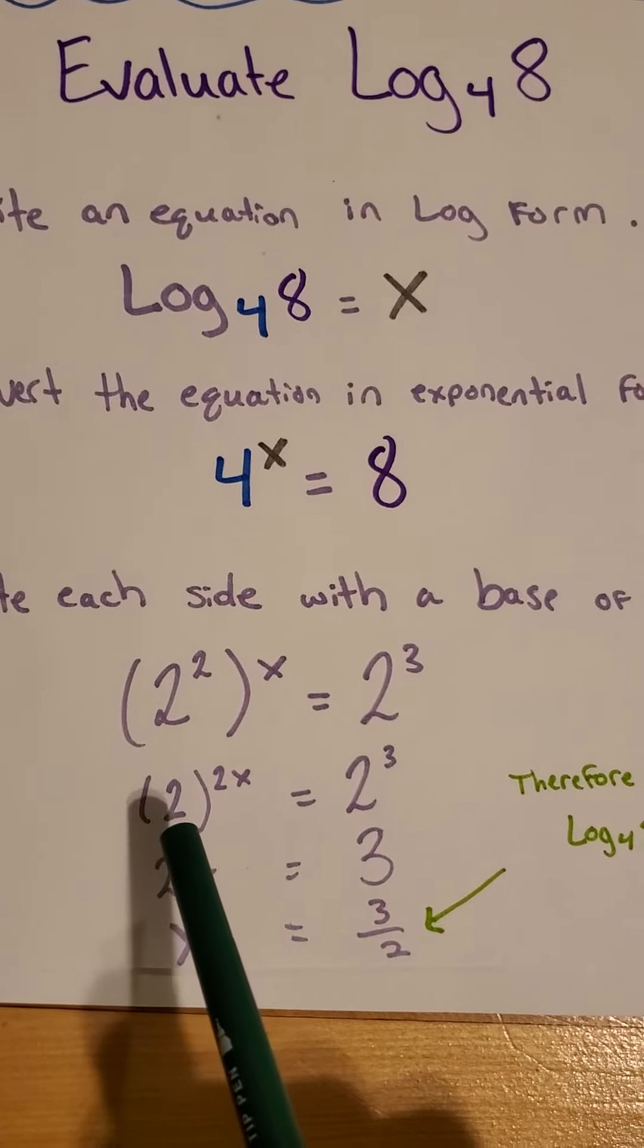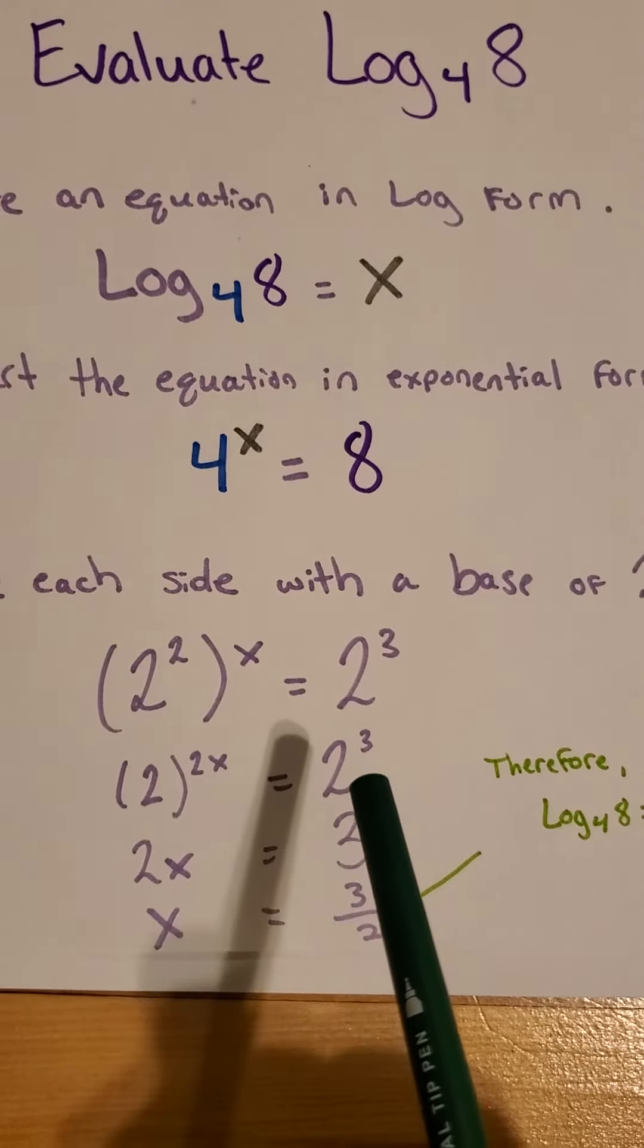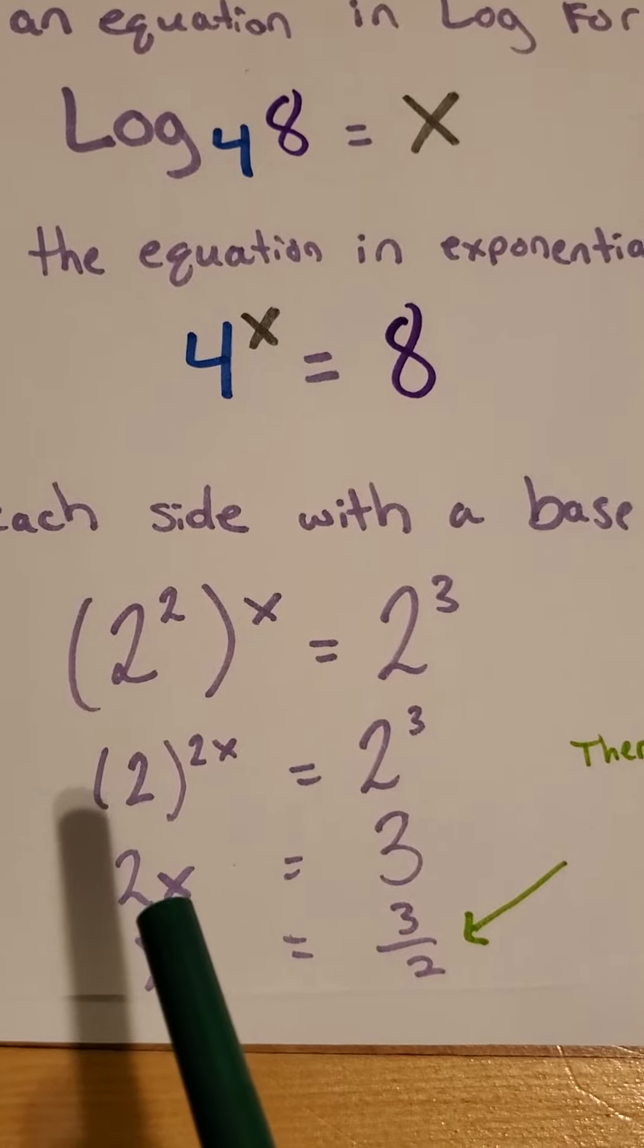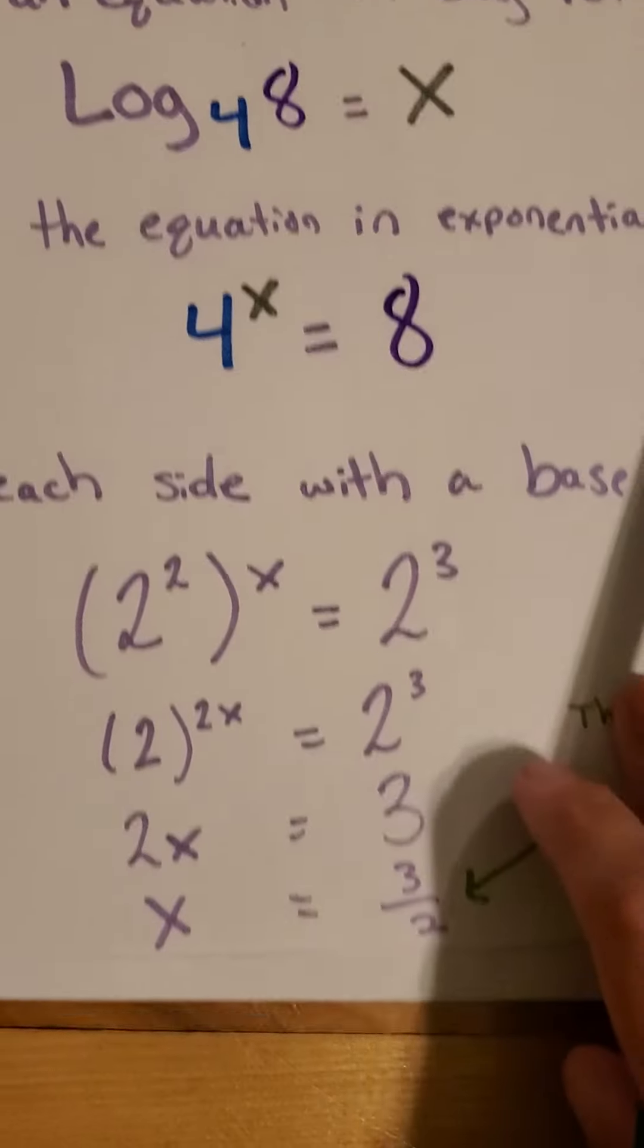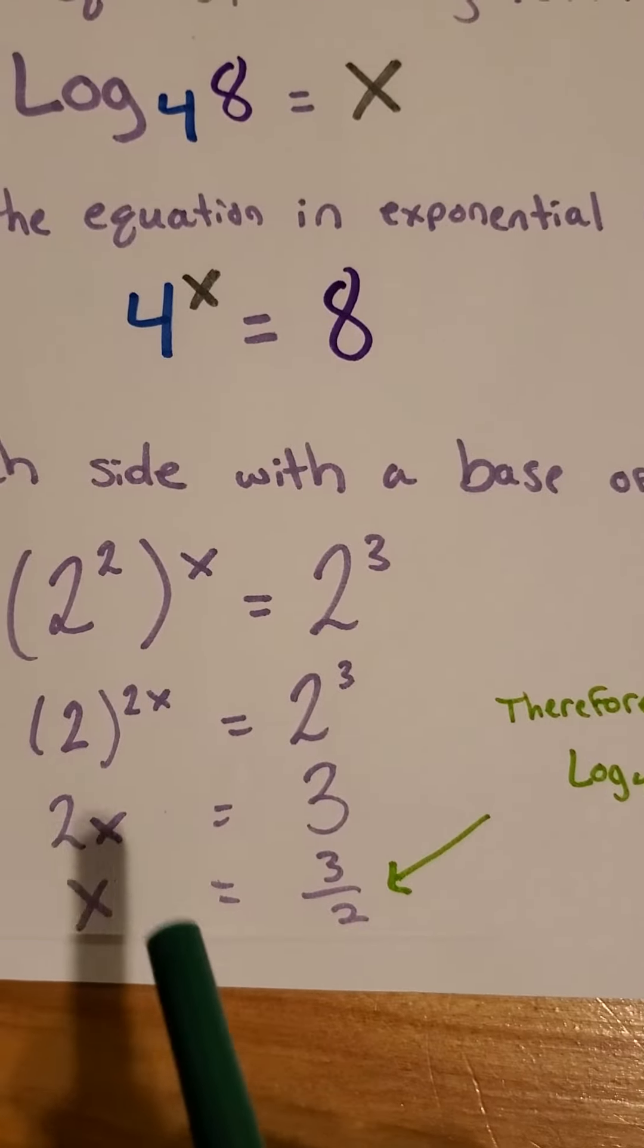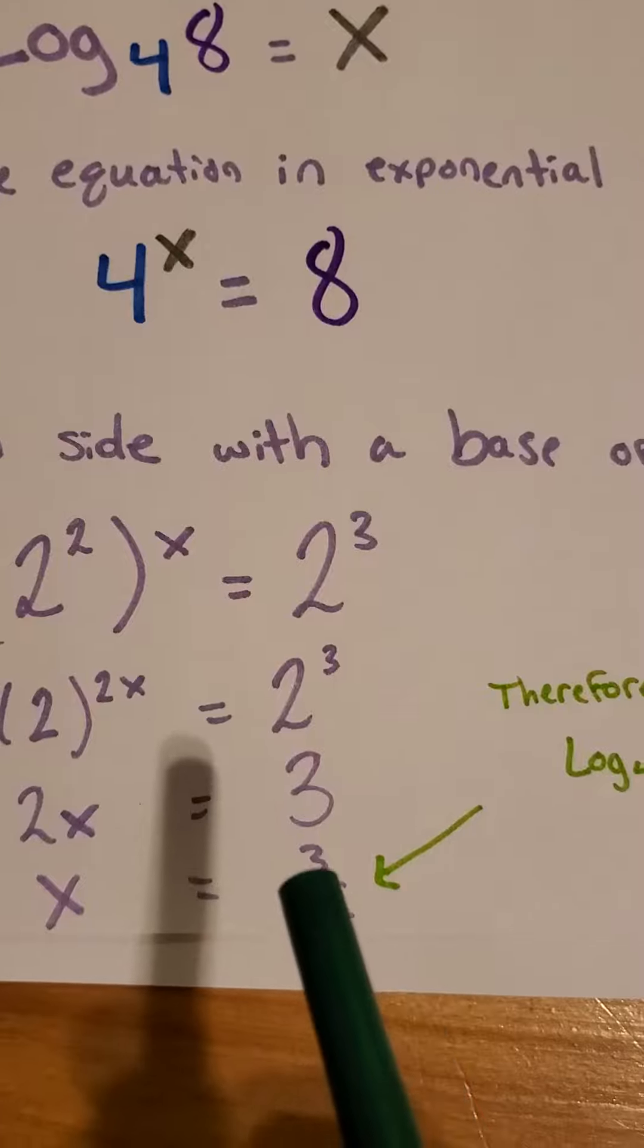Then we keep going. 2. So, 2x equals 2 to the third. Now, breaking it down. 2x equals 3. Because, basically, the 2s are going to cancel each other out. And, eventually, we're left with x equals 3 over 2.